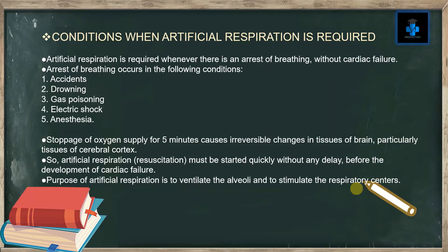Arrest of breathing occurs in the following conditions: number one, accidents; number two, drowning; number three, gas poisoning; number four, electrical shock; number five, anesthesia. Stoppage of oxygen supply for five minutes causes irreversible changes in the tissue of the brain, particularly the tissues of the cerebral cortex.